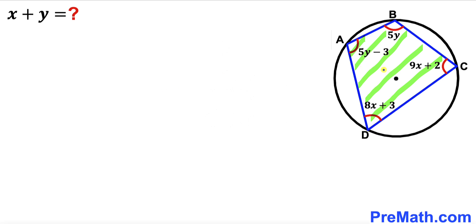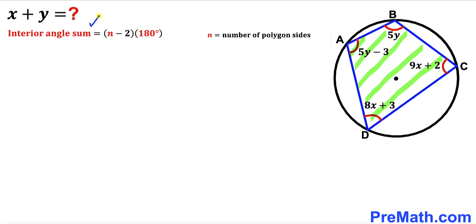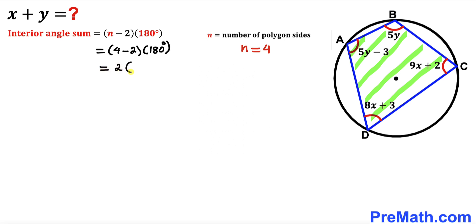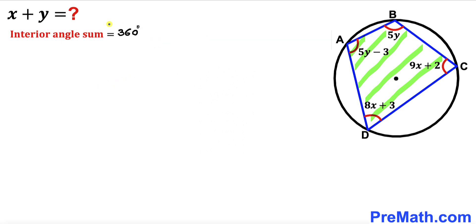Let's focus on quadrilateral ABCD and recall the formula for the interior angle sum of a quadrilateral: interior angle sum equals (n minus 2) times 180 degrees, where n is the number of sides. In our case n equals 4, so the interior angle sum is (4 minus 2) times 180, which simplifies to 2 times 180, giving us 360 degrees.